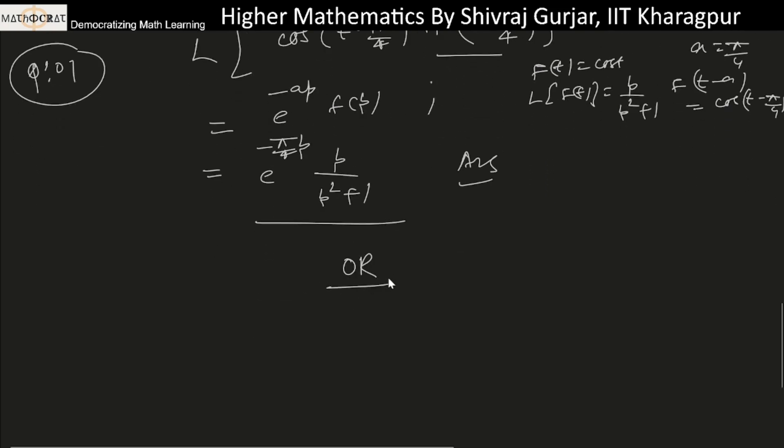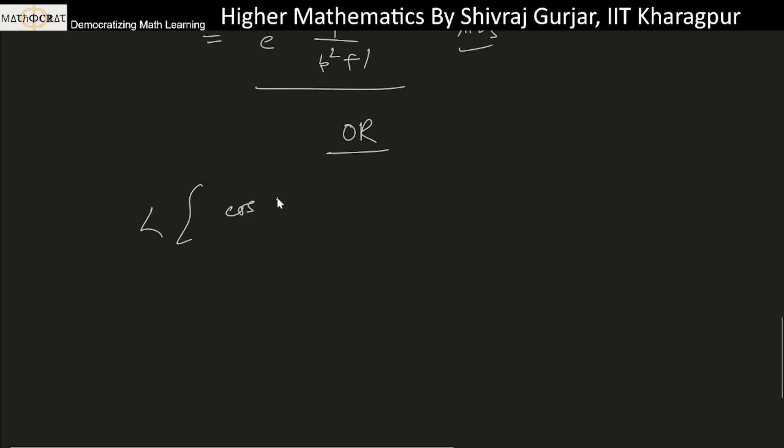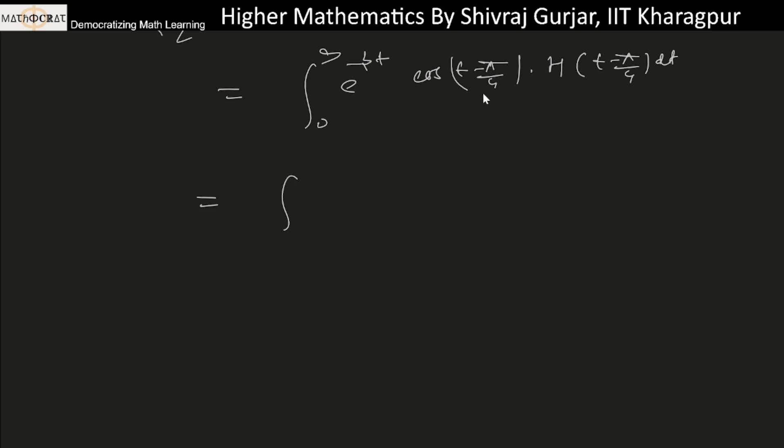If we don't know the second shifting theorem, we can still solve this. We need Laplace of cos(t - π/4) times the Heaviside function of t - π/4. This is the integral from 0 to infinity of e^(-pt) times the Heaviside function of t - π/4 dt. When t is less than π/4, the Heaviside function's value is 0. When t is greater than π/4, the Heaviside function value is 1, so we have e^(-pt) cos(t - π/4) dt.